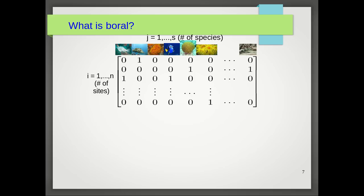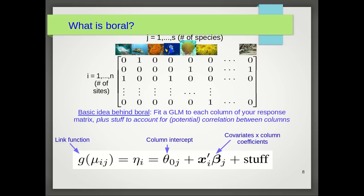The main type of data I'm talking about in this video is multivariate abundance data or community composition data, whereby you've got a response matrix i equals 1 to n sites and j equals 1 to s species. The basic idea behind BORAL is that we fit a GLM to each column of the response matrix, in this case to each species, plus stuff to account for potential correlation between the columns between the species. The equation that's fitted in BORAL is seen at the bottom of this slide. You have a link function which relates the mean to covariates, and each column or each species will get its own intercept and regression coefficients, and there's some stuff there to account for potential correlation between the species.